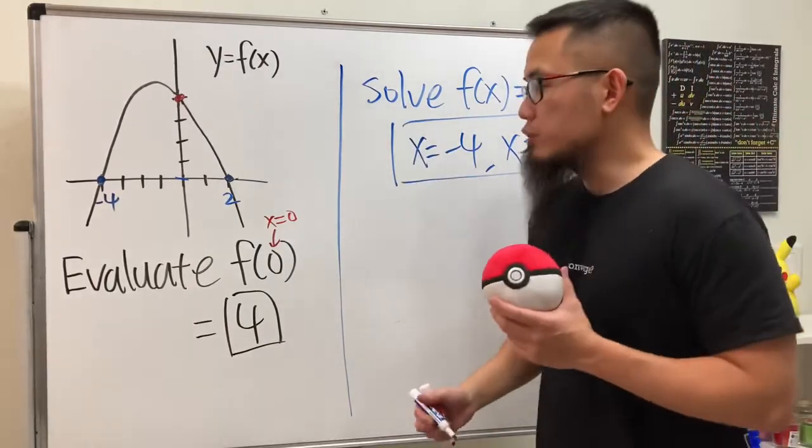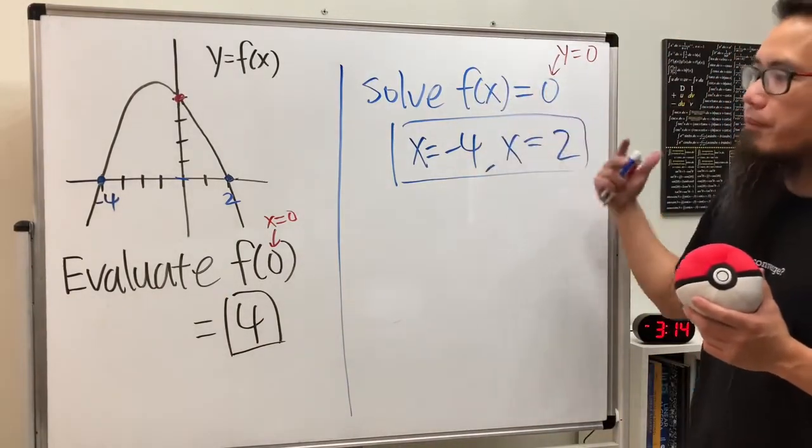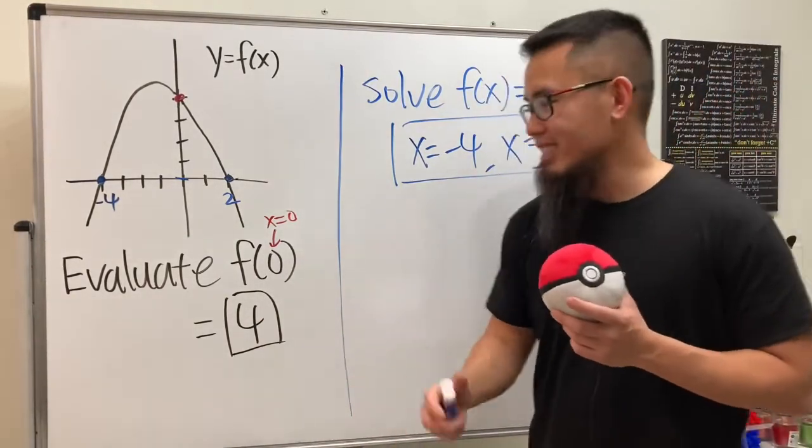Be really careful when the question is asking you for f of 0 versus f of x is equal to 0. Right, they are very different, and that's it.